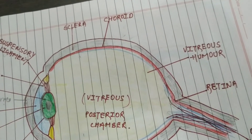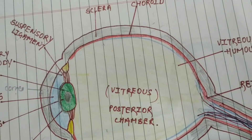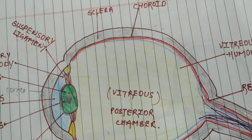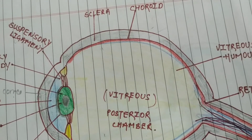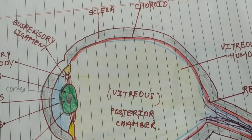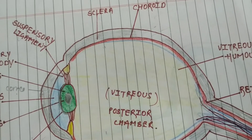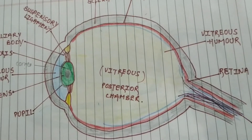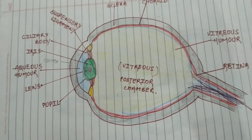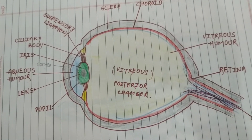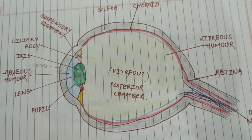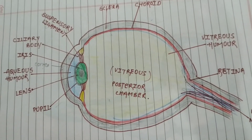The retina is the innermost light-sensitive layer of tissue of the eye. The optics of the eye create a focused 2D image of the visual world on the retina, which translates that image into electrical neural impulses to the brain to create an image. This is the mechanical function of the retina. The eye is a very sensory organ of the body that provides us vision and helps us to view the colorful world.